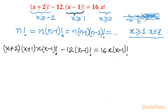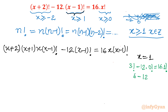But before dividing we must make sure (x-1)! is not zero and that x=1 is not a solution of the original equation. Let me check: if x=1 then we get 3! minus 12 times 0! equal to 16 times 1!, which gives 6 minus 12 = 16, i.e. -6 ≠ 16. So x=1 is not a solution, which means x≠1.